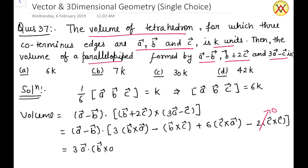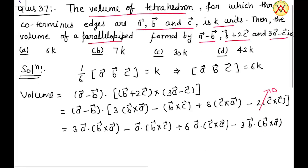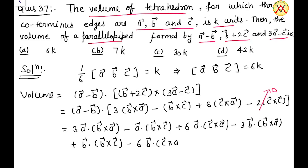Expanding the dot product, we get: 3a · (b × a) - a · (b × c) + 6a · (c × a) - 3b · (b × a) + b · (b × c) - 6b · (c × a).